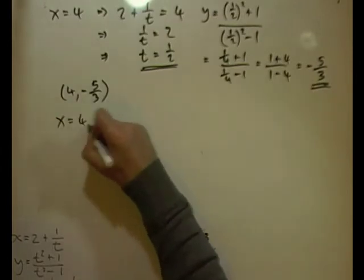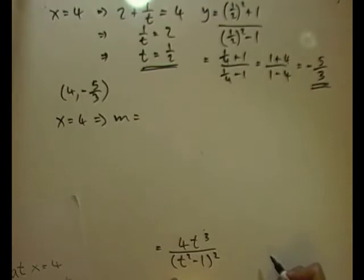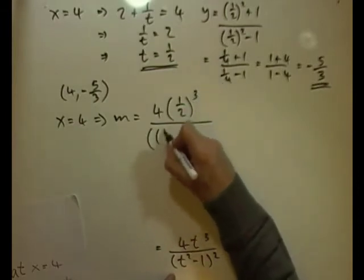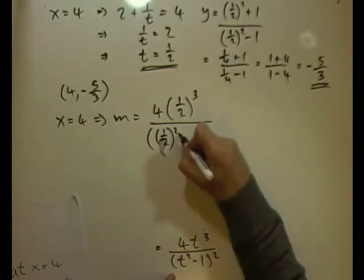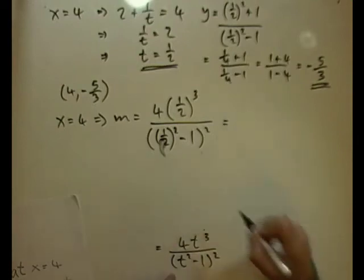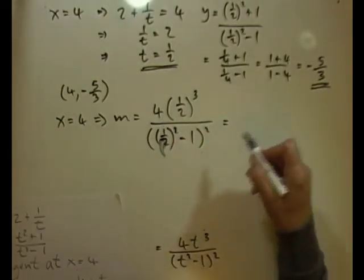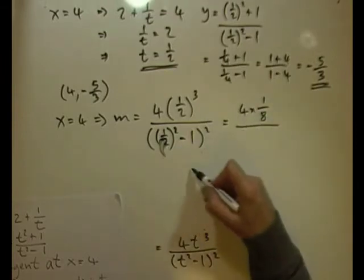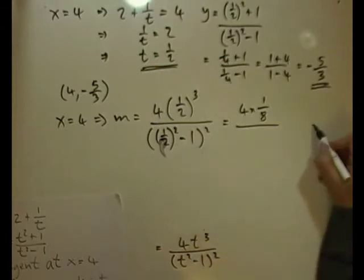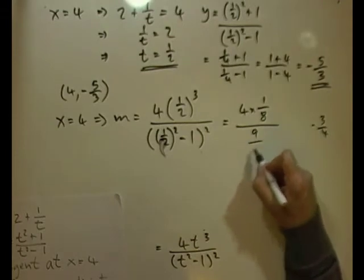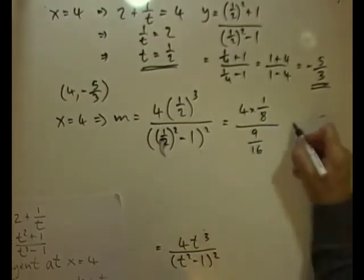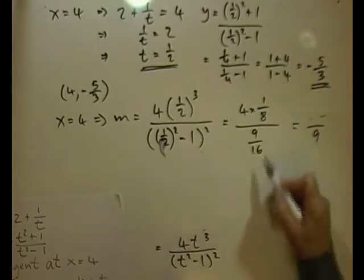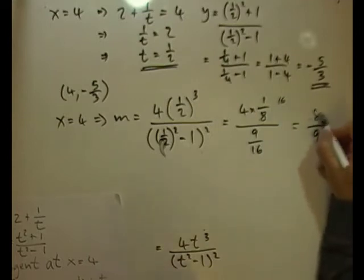Next, the gradient at t = 1/2. Using dy/dx = 4t³/(t²−1)²: numerator is 4×(1/2)³ = 4×(1/8) = 1/2. Denominator: (1/4−1)² = (−3/4)² = 9/16. So the gradient is (1/2)/(9/16). Multiplying top and bottom by 16 gives 8/9.